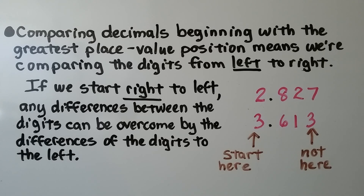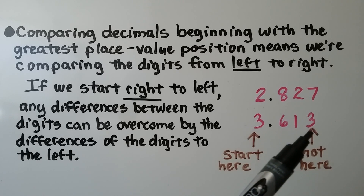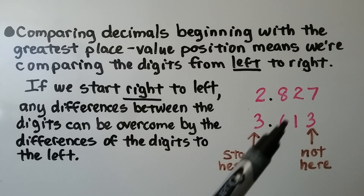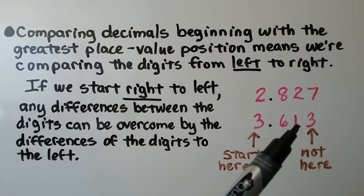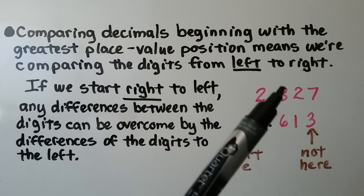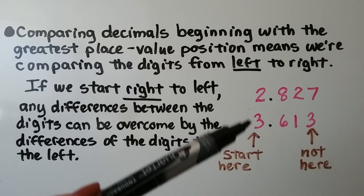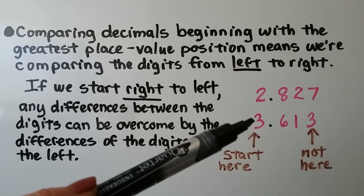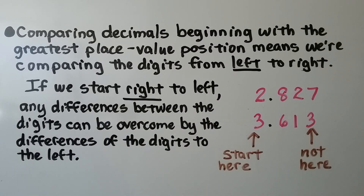Comparing decimals beginning with the greatest place value position means we're comparing the digits from left to right. If we start right to left, any differences between the digits can be overcome by the differences of the digits to the left. For example, starting from the right, this digit is less, so we may think the bottom decimal is less — and it still seems less moving left — but when we get to the ones place, we see that decimal is actually greater. If we had started at the ones place, we would have compared it and been finished. So it's really important to go from left to right from the greatest place value position.